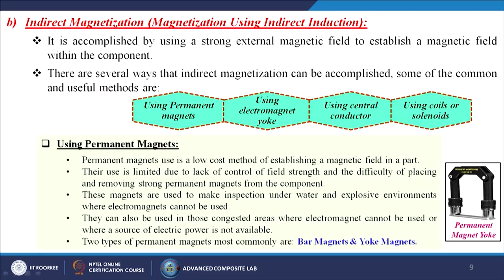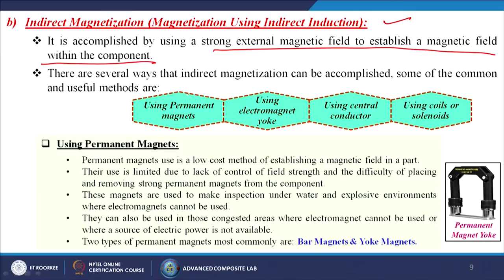Next, indirect magnetization — generally called magnetization using indirect induction — is accomplished by using a strong external magnetic field to establish a magnetic field within the component. In this case we are not directly using current through the material to magnetize it; instead, we create the magnetic field outside the component which is then induced inside the specimen for testing. There are several ways to accomplish indirect magnetization: using permanent magnets, electromagnet yoke, central conductor, coils or solenoids.